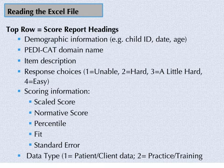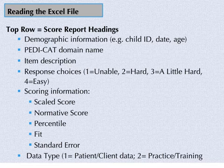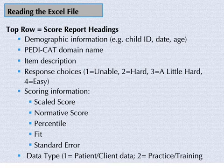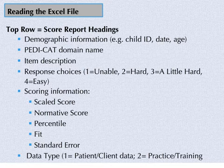The Excel file will have score report headings in the top row including demographic information — e.g., child ID number, date, age, device use, gender, order — the PDCAT domain name, item description, response choice such as 1 equals unable, 2 equals hard, 3 equals a little hard, 4 equals easy, and scoring information — e.g., scaled score, normative score, percentile, fit, and standard error.